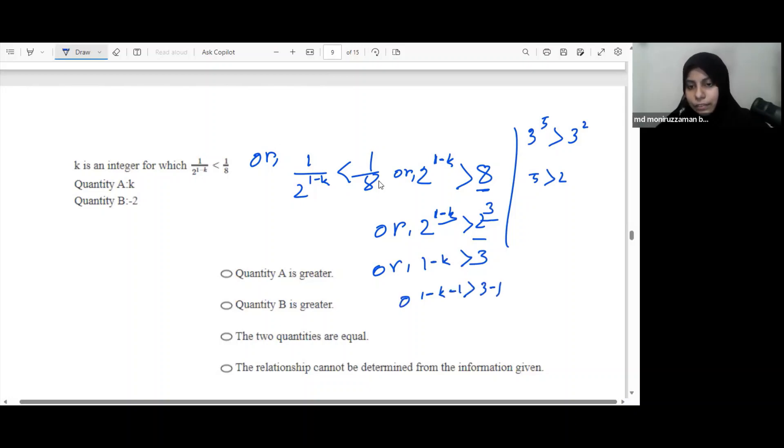So we will divide the power 2. I will divide it. Minus k is greater than 2. Multiply by negative 1, we can see that minus 2 is greater than that. So we can see that the quantity is greater than that.